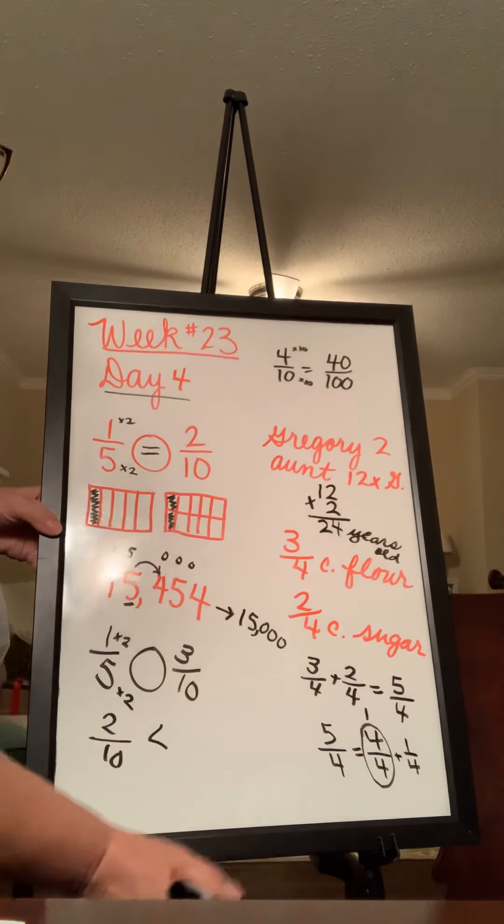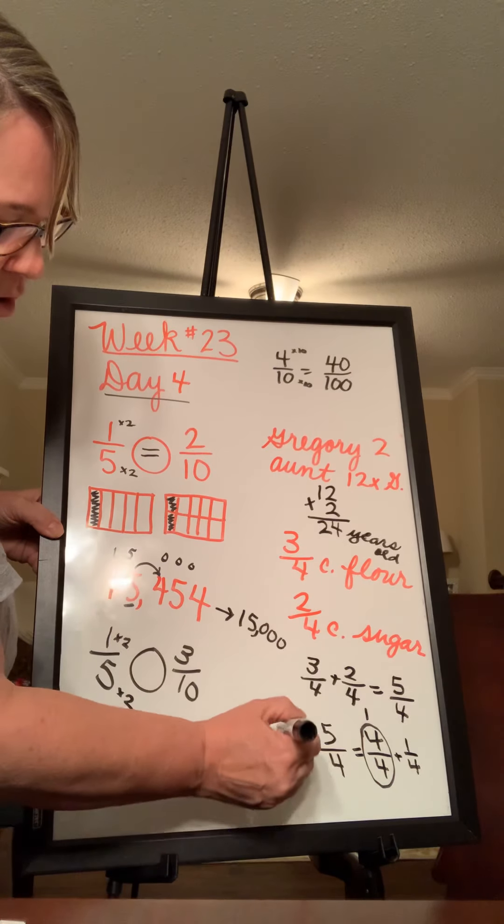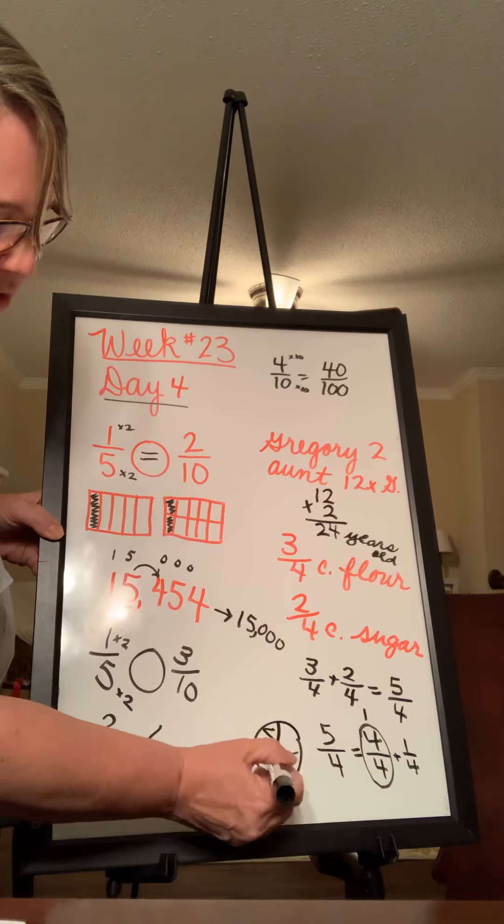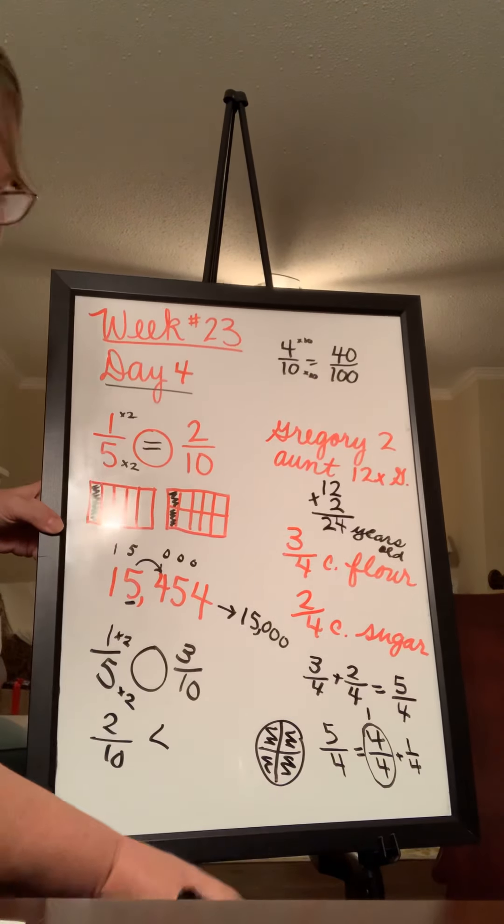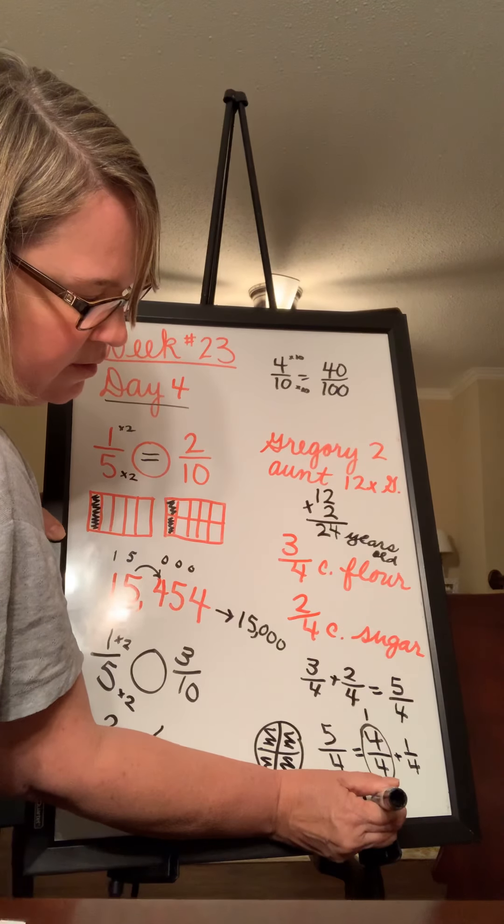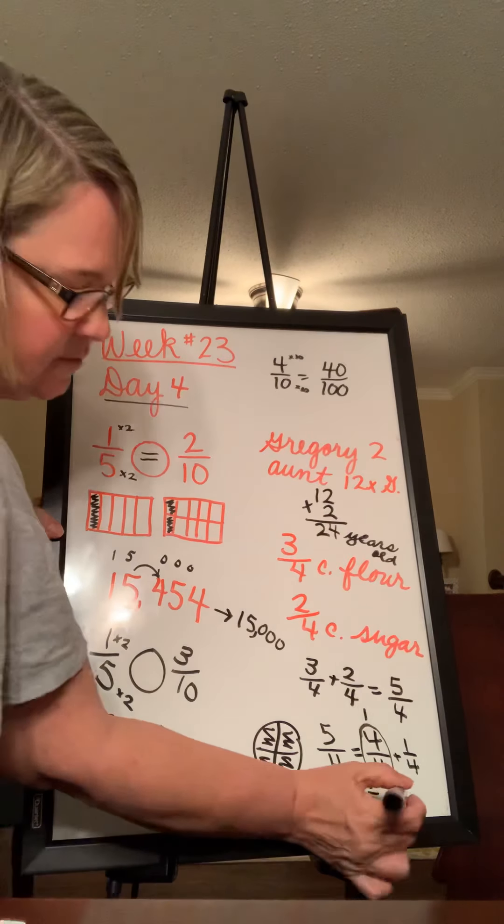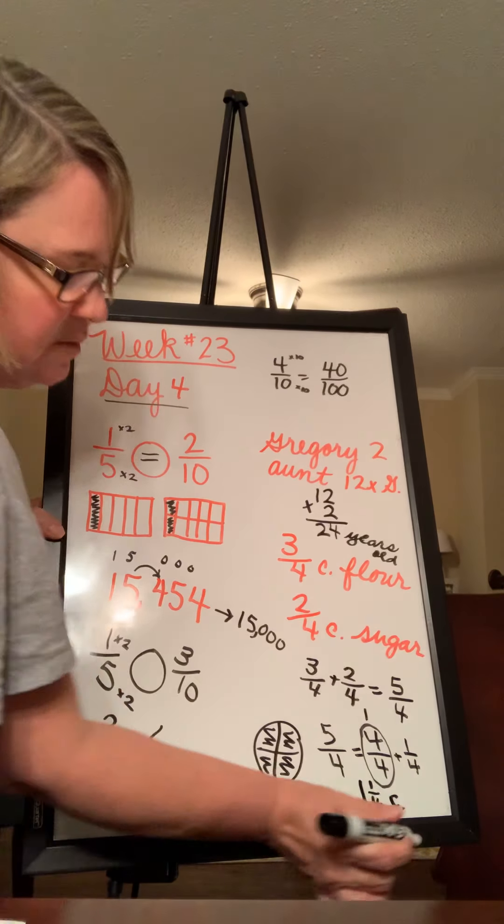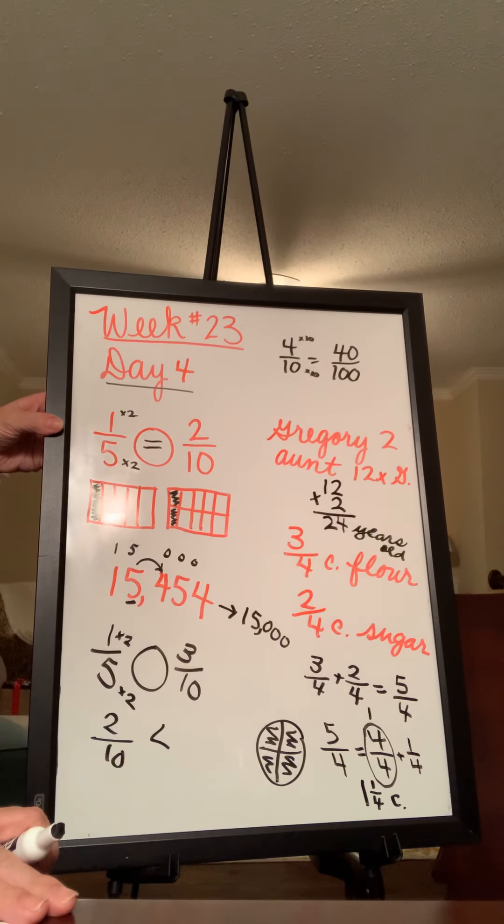Remember, we talked about it the other day. If you ate four out of four slices of pizza, you ate the whole thing. So four-fourths is one. So the answer then is one and one-fourth cups. And C period stands for cups. So the answer is one and one-fourth cups.